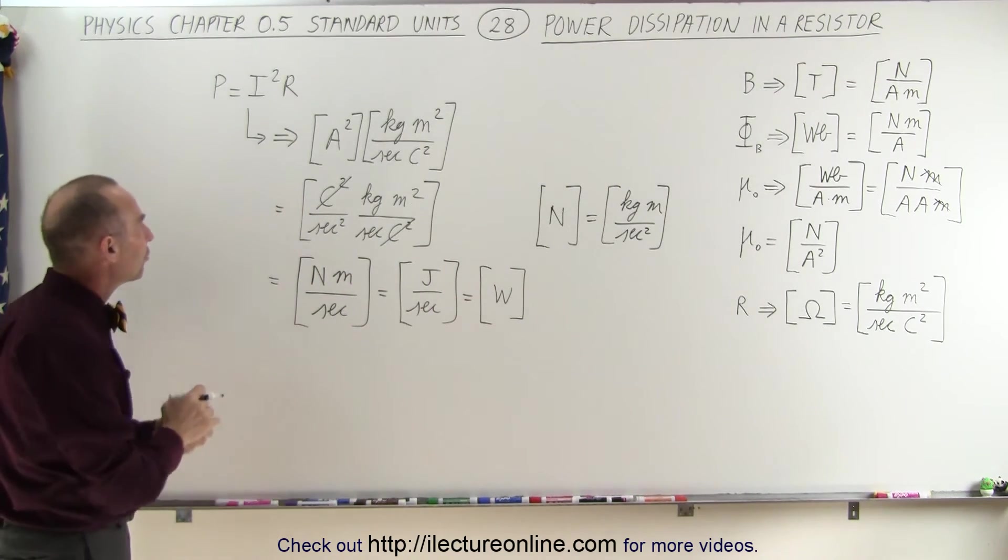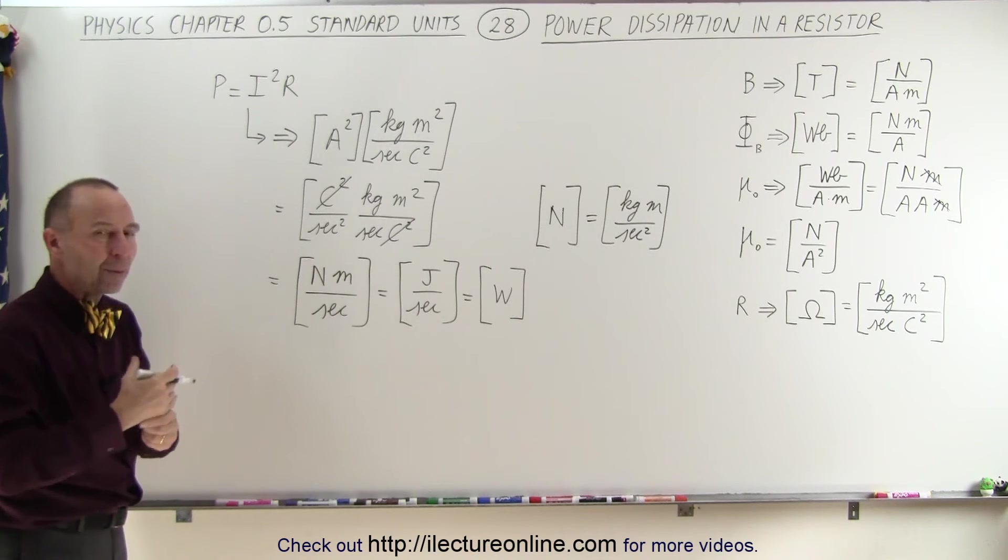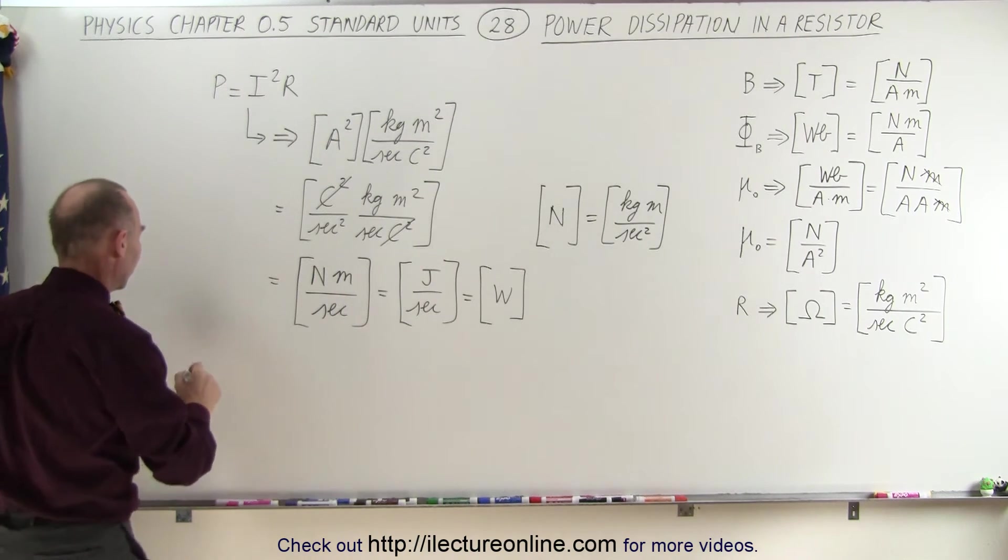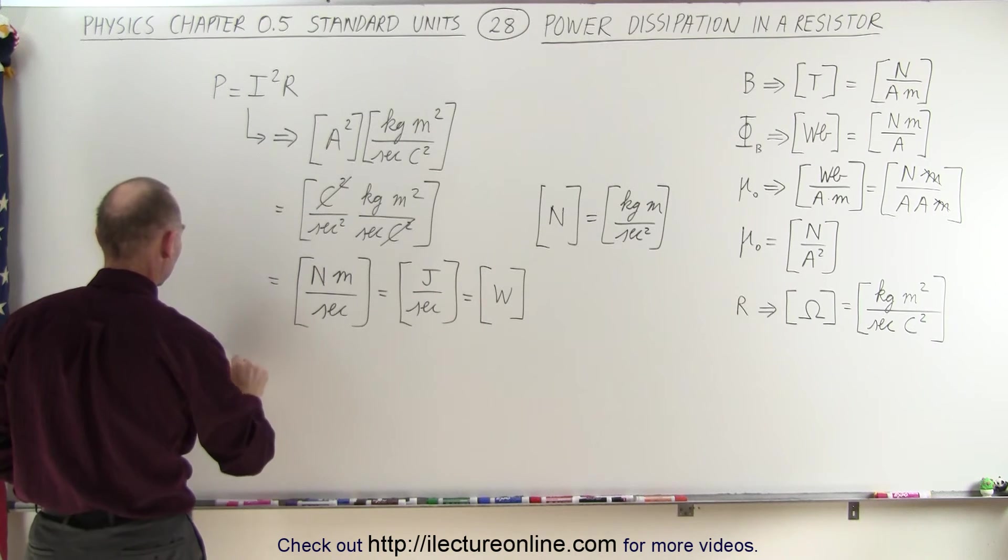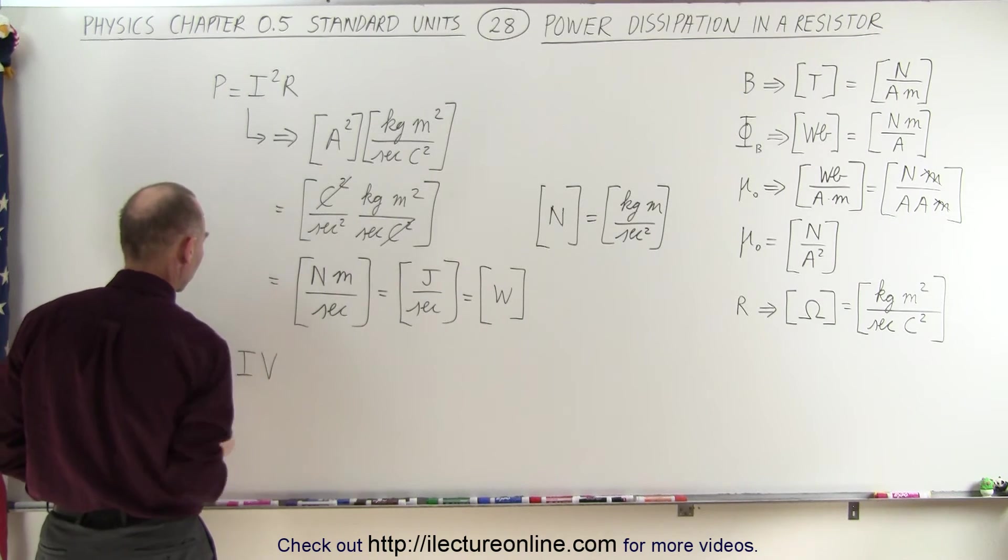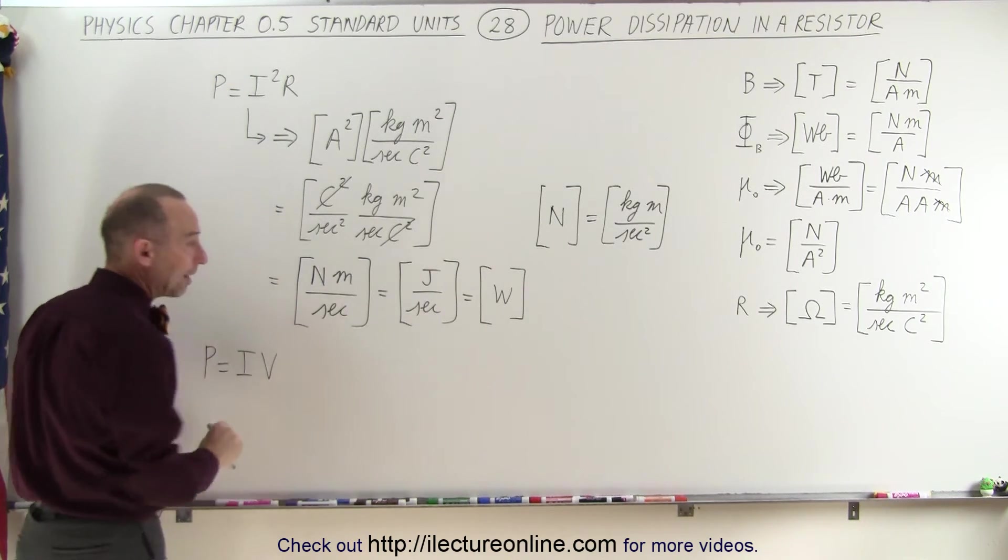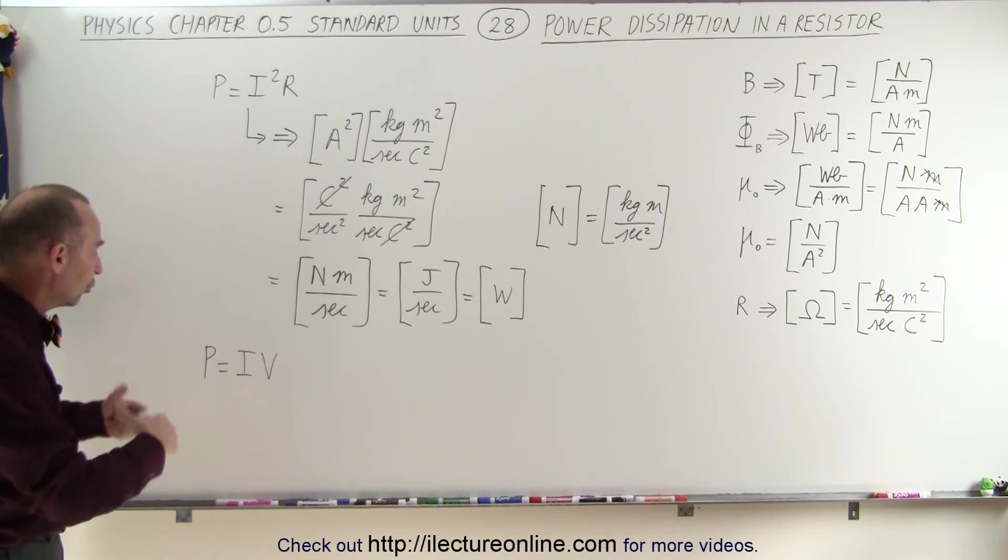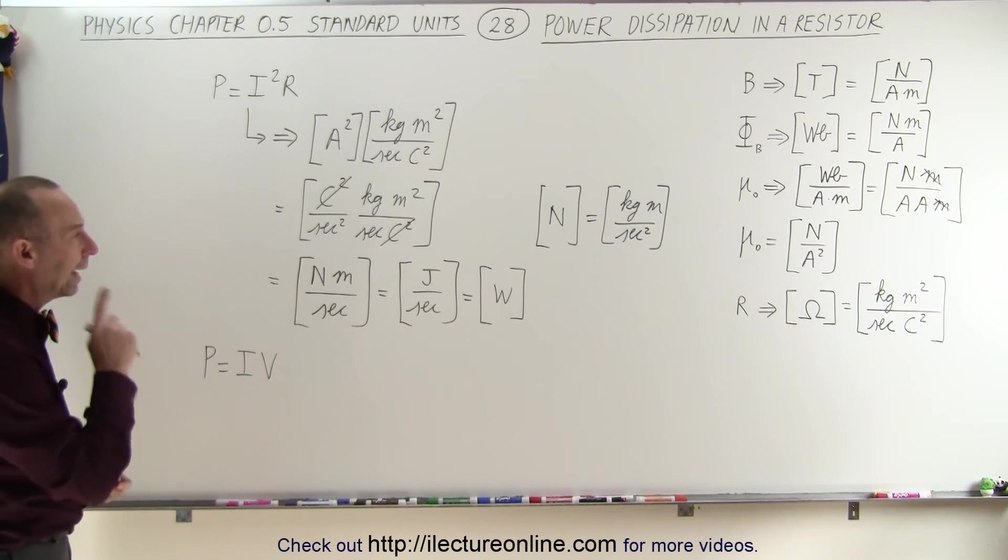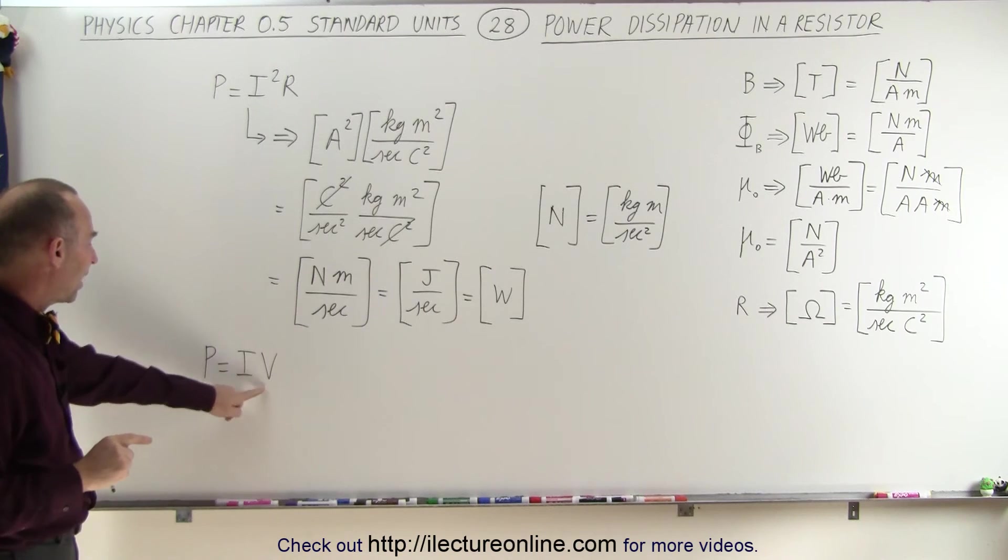Now we also have an equation that gives us the power supplied to a resistor, and that can be written as power is equal to the current times the voltage. Well, that should also have units for watts or units for power, which is watts. And let's see here, we need to find a way to write the units for voltage.